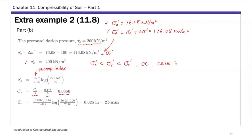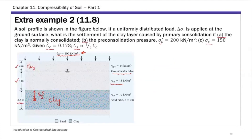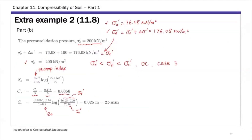Substituting the stress values — sigma f prime is 76.08 plus 100, and sigma₀ prime is 76.08 — and using the initial void ratio e₀ of 0.8, which is given, the primary consolidation settlement for Case 3, part B, is 0.025 meters or 25 millimeters. That's part B for OC clay, calculation Case 3.